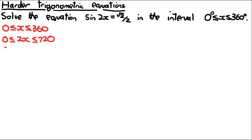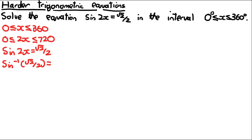We use the same approach as in the previous video. sin(2x) = √2/2, so arcsin(√2/2) = 45. We're going to draw the graph over the extended interval, so it is going to be quite long.